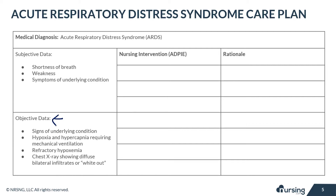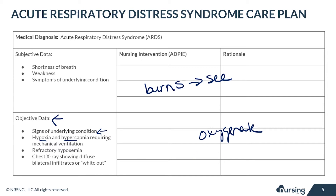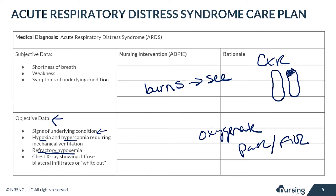For objective data, the patient may show signs of the underlying condition — for example, visible burns throughout the body. The patient with ARDS will have hypoxemia and hypercapnia requiring mechanical ventilation, as they are unable to effectively oxygenate on their own. The patient will have refractory hypoxemia, where the PaO2/FiO2 ratio is mild, moderate, or severe. The chest x-ray will show diffuse bilateral infiltrates, or a 'whiteout' in the lungs — appearing white due to fluid instead of the normal black appearance caused by air.